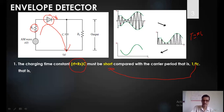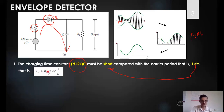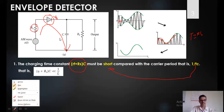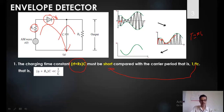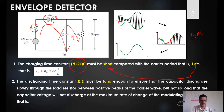The carrier frequency FC corresponds to time constant 1/FC. This charging time constant should be short enough compared to 1/FC — that is the first condition: (RF + RS)·C should be very much smaller than 1/FC. If the time constant is very short, the charging happens very fast. Now, for discharging, the capacitor discharges through the load resistor RL, so the discharging time constant is RL·C. The capacitor should discharge very slowly — it should charge fast but discharge slowly.